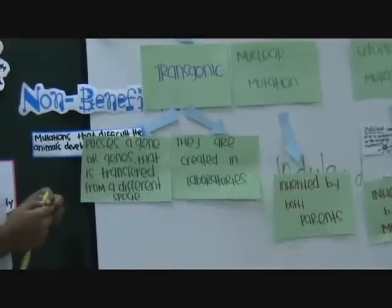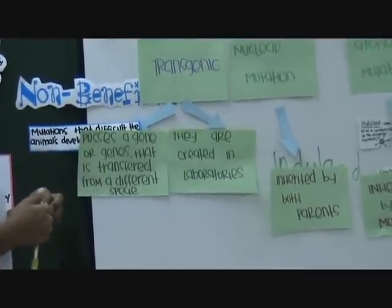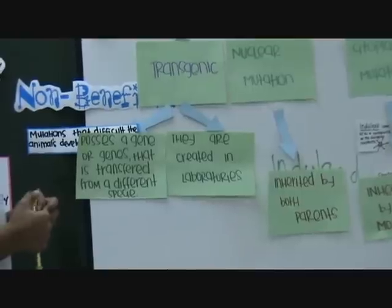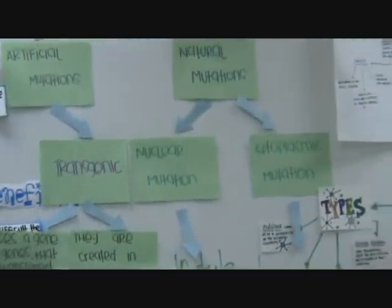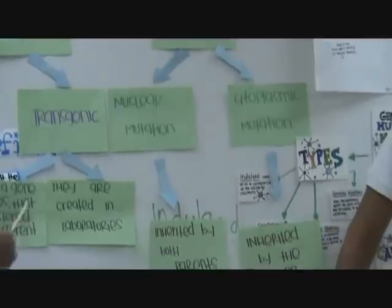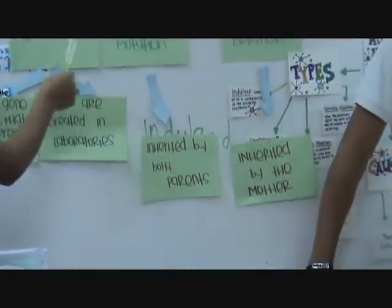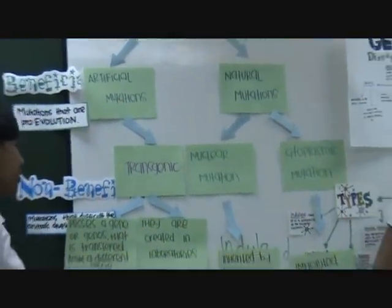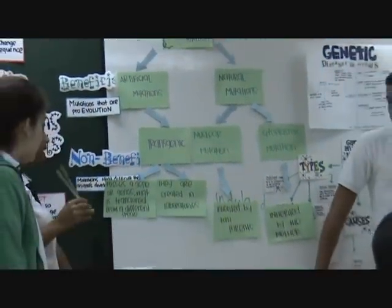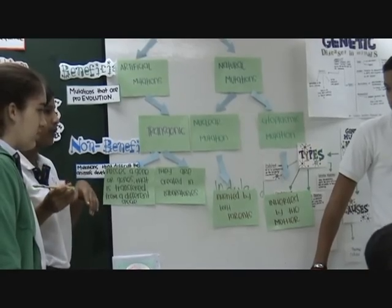We have artificial mutations, which are mutations created by humans to achieve the perfect plant. Transgenic mutations are a type of plant mutation where the plant possesses a gene that is transferred from a different species.